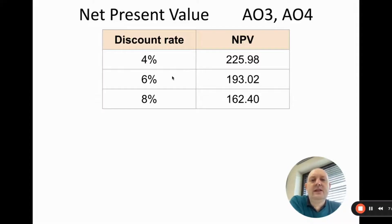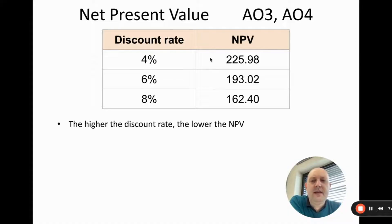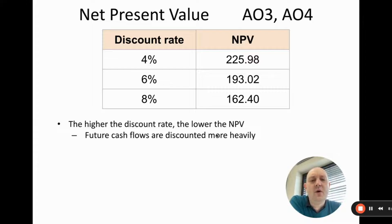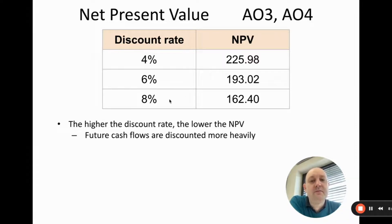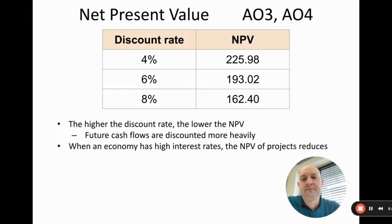Comparing the results: at four percent, NPV is around 223; at six percent, 193; at eight percent, 162.4. The higher the discount rate, the lower the NPV. This is because future cash flows are discounted more heavily at higher rates — if inflation is eight percent, the value of money in the future is lower compared to four percent.